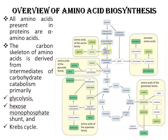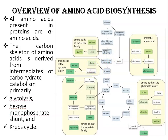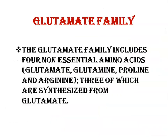This is the citric acid cycle. Then there is glycolysis. In the serine family, the precursor is 3-phosphoglycerate, which is part of glycolysis. For aromatic amino acids, the precursor is chorismate, and for the pyruvate family the precursor is pyruvate. Today we will discuss only the biosynthesis of the glutamate family.